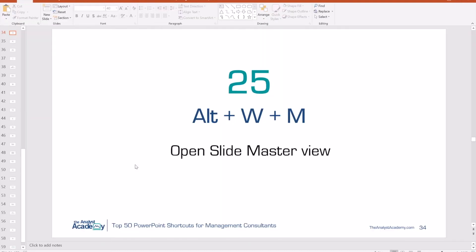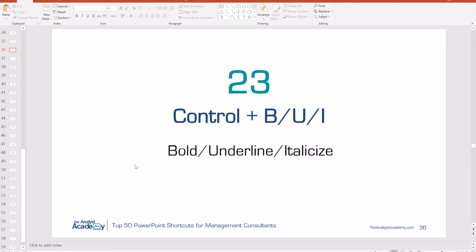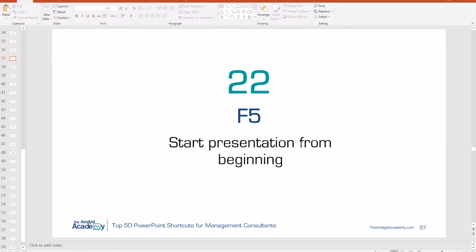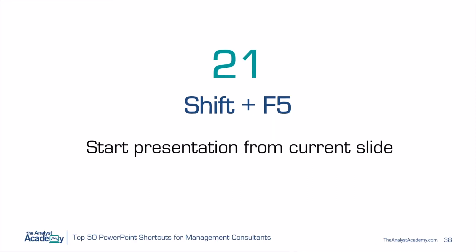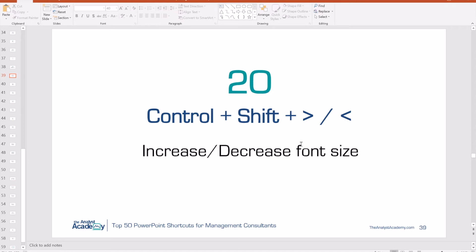Number 24: Control B, U, or I to bold, underline, or italicize. Pretty simple — Control B, Control U, Control I. Number 22: F5 allows you to start a presentation from the beginning. Number 21: Shift F5 allows you to start a presentation from your current slide. Hold Shift F5 and now you're in presentation mode. Hit Escape to get back out.